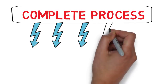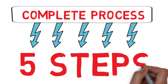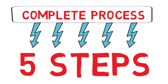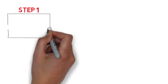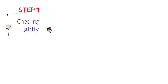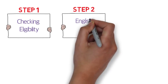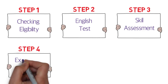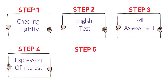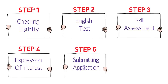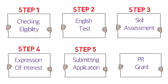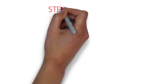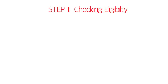I've divided the complete process into five simple steps. Step one is checking eligibility. Step two is the English test. Step three is skill assessment. Step four is expression of interest. The last step is submitting your application, after which you'll be given a PR grant.